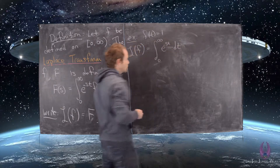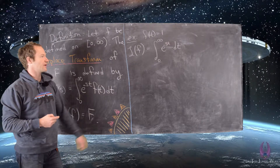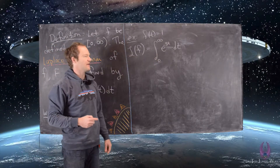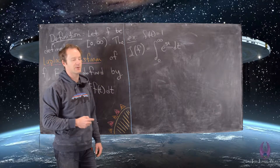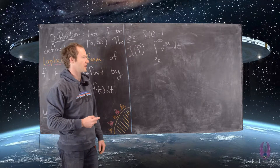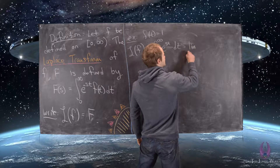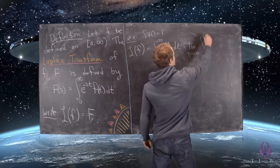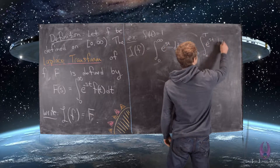We can recall the definition of the improper integral — for these first couple of examples we'll be really careful with this, but later we'll be a little more hand-wavy. This is equal to the limit as capital T goes to infinity of the integral from zero to capital T of e to the minus st dt.